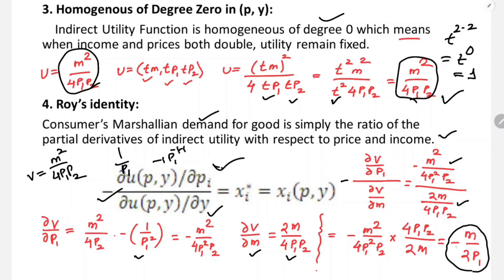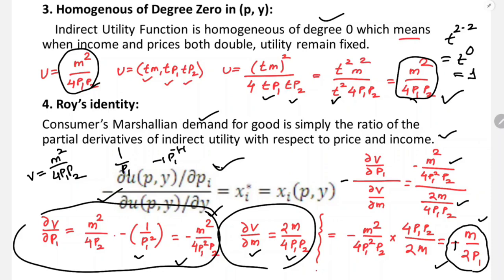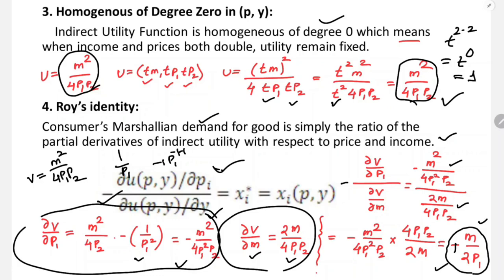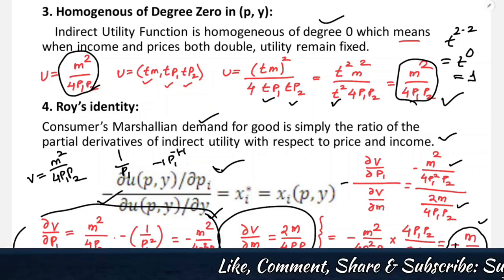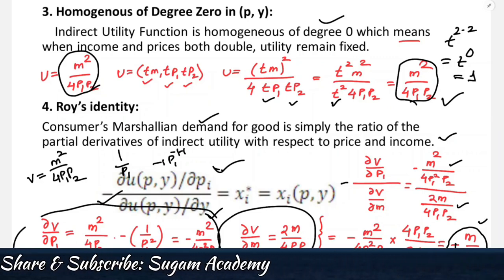The result is -(-M/(2p1)) = M/(2p1), which matches our Marshallian demand x1 = M/(2p1). So Roy's Identity is verified. From the indirect utility function, taking the derivative with respect to price and dividing by the derivative with respect to income gives the Marshallian demand function. This is Roy's Identity. I hope this class was helpful — please like, share, and subscribe. Thank you.